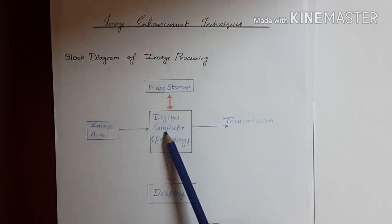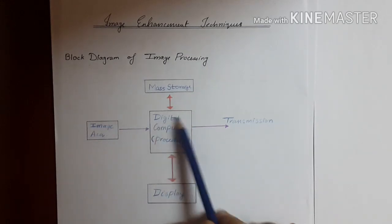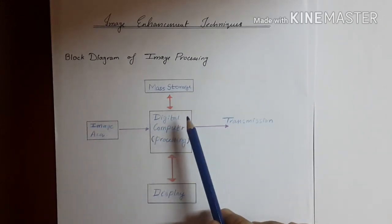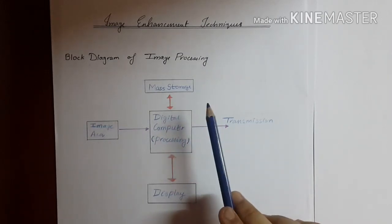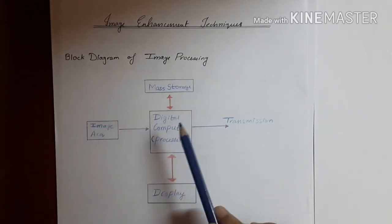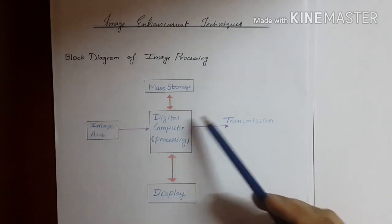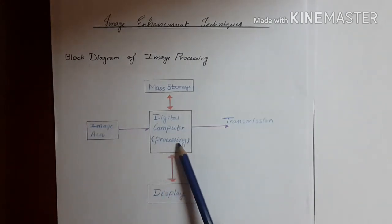The image is enhanced or filtered to remove noise. All that comes under this block. Now after the image is processed, it needs to be displayed. Display devices are used for this purpose.